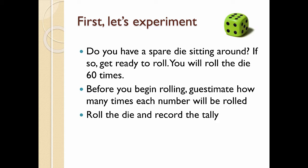So first, let's experiment. Do you have a spare die sitting around? If you do, then get ready to roll. So what I want you to do is pause and roll the die 60 times or as many times as you can bear to roll it. Try to roll it a bunch. But before you begin rolling, do a guesstimate. How many times do you think each number will be rolled? For example, how many times will you roll a 4? How many times do you think you'll roll a 5 out of those 60 times or however many times you plan on rolling it?